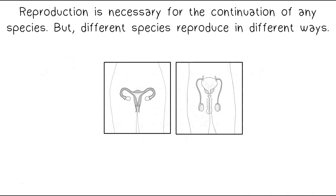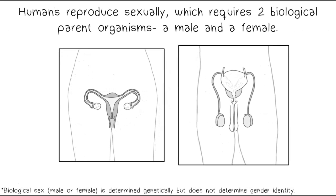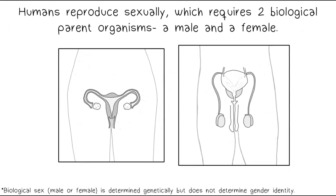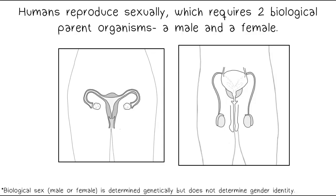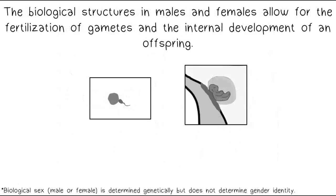Reproduction is necessary for the continuation of any species, but different species reproduce in different ways. Humans reproduce sexually, which requires two biological parent organisms — a male and a female. The biological structures in males and females allow for the fertilization of gametes and the internal development of an offspring.